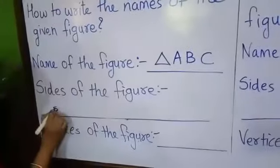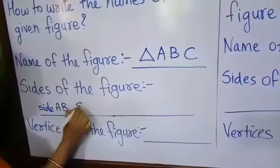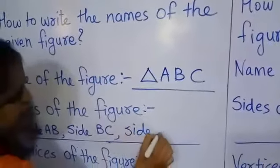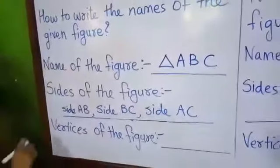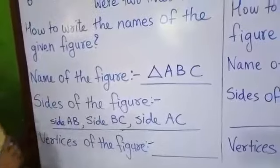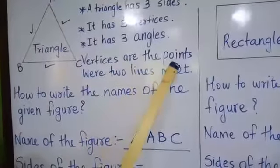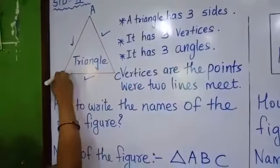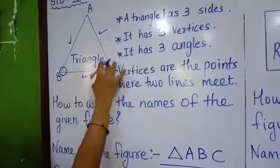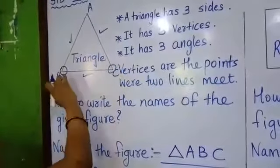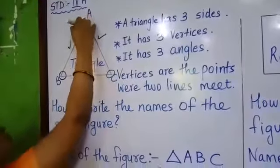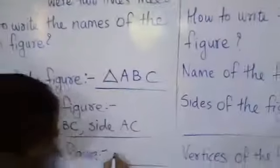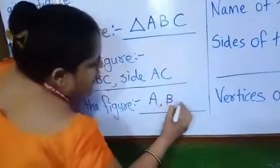Now I am going to write the vertices. The points where two lines meet: AB and BC meet at one point, BC and AC meet at another point, and BA and AC meet at the third point. So the three vertices are A, B, and C.